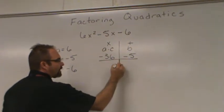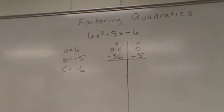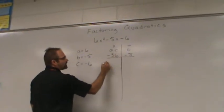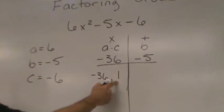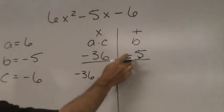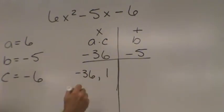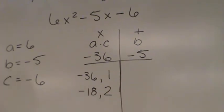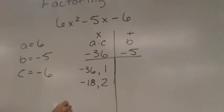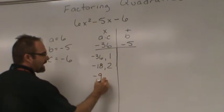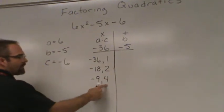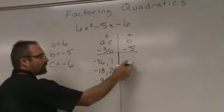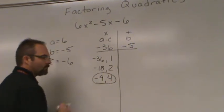What we're going to do next is write down the factors of what A times C was — so in this case, the factors of negative 36. We can start with negative 36 times 1, but when we add those together we don't get negative 5. How about negative 18 and 2? Again, you don't get negative 5. How about negative 9 and 4? Negative 9 times 4 is negative 36, and negative 9 plus 4 is negative 5. That's what we were looking for.